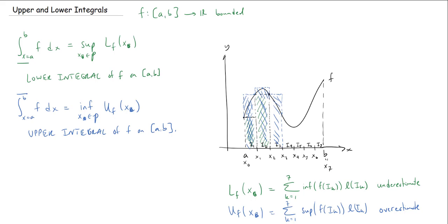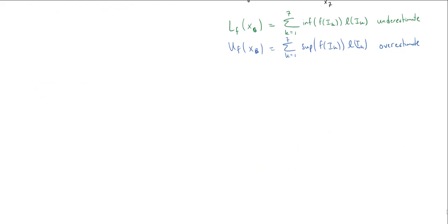The lower integral is the supremum of all underestimates, so it should be less than or equal to the area under the curve. The upper integral, being the infimum of all upper sums, should be greater than or equal to the area under the curve. So it seems reasonable that the upper integral should always be at least as big as the lower integral — but while reasonable, that's something we're going to have to prove.